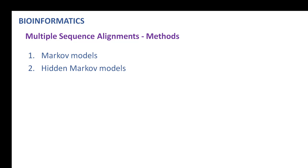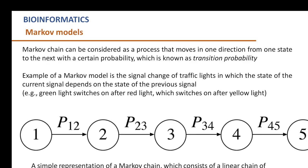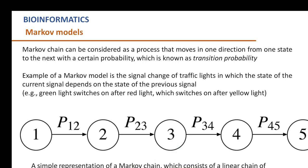Before we go to the Hidden Markov Model, first we look at the Markov model. Whenever we say Markov model, it is like moving in one direction. A Markov chain can be considered as a process that moves in one direction from one state to another state, and that state transition probability is the transition probability. One widely used example is the signal change of traffic lights, which is one of the examples for Markov models.